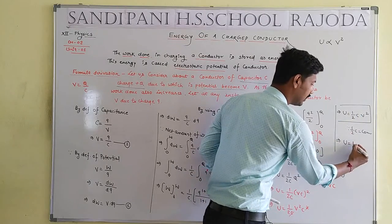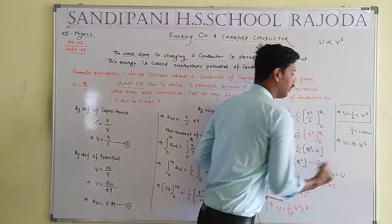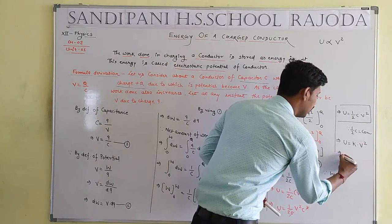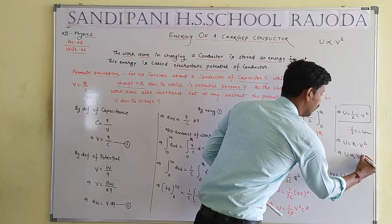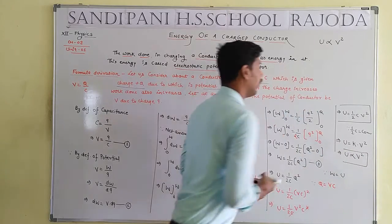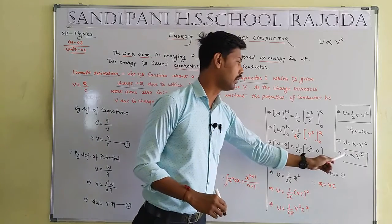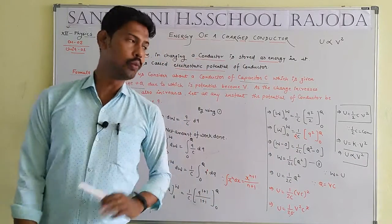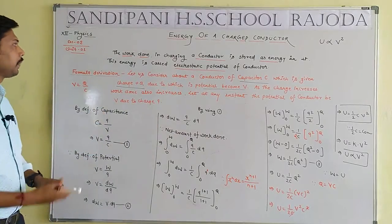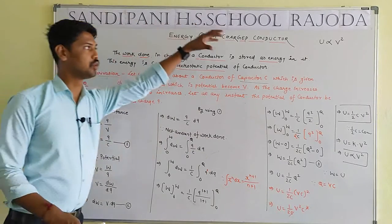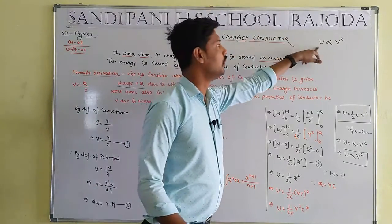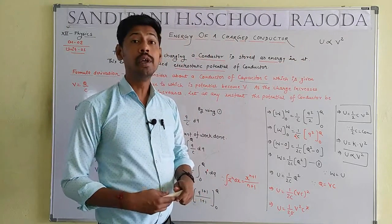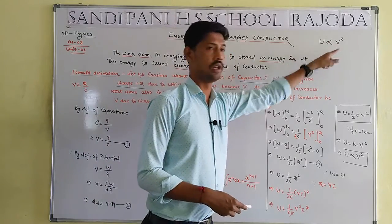Here 1 by 2C is a constant. Since proportional sign replaces the constant: when constant is removed, proportional sign is added. Therefore, the amount of energy is directly proportional to the square of potential — U ∝ V squared. This is our proved result.